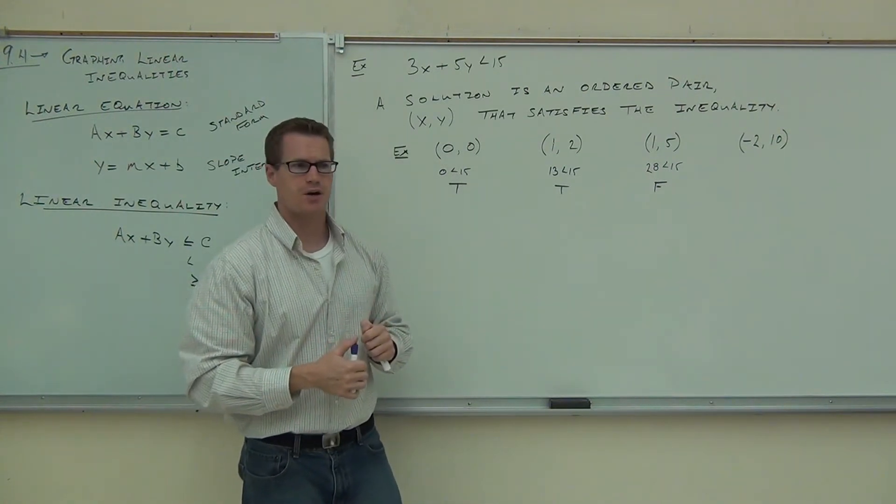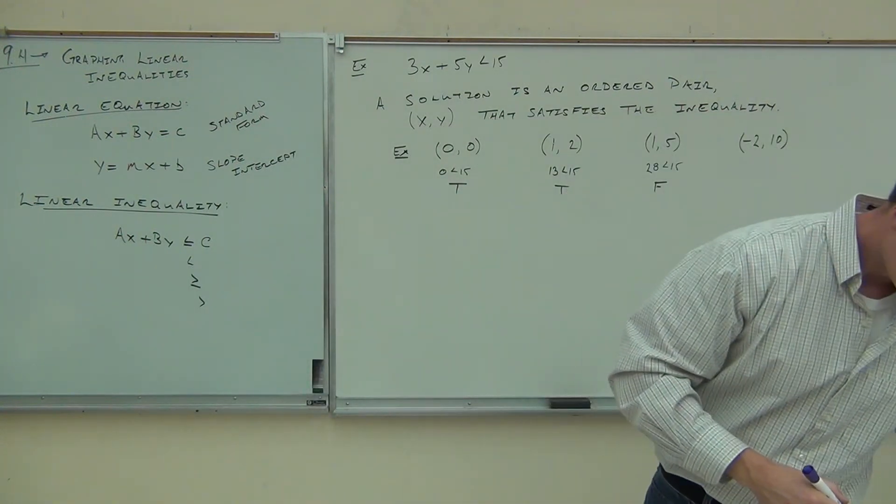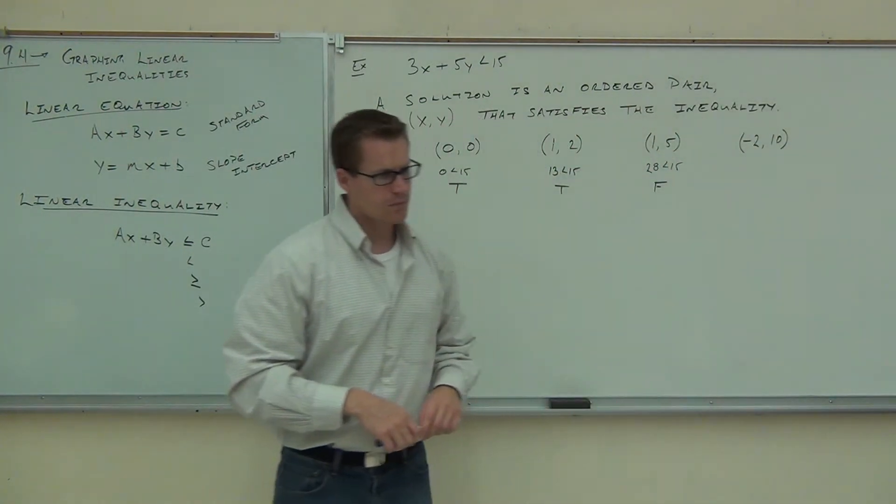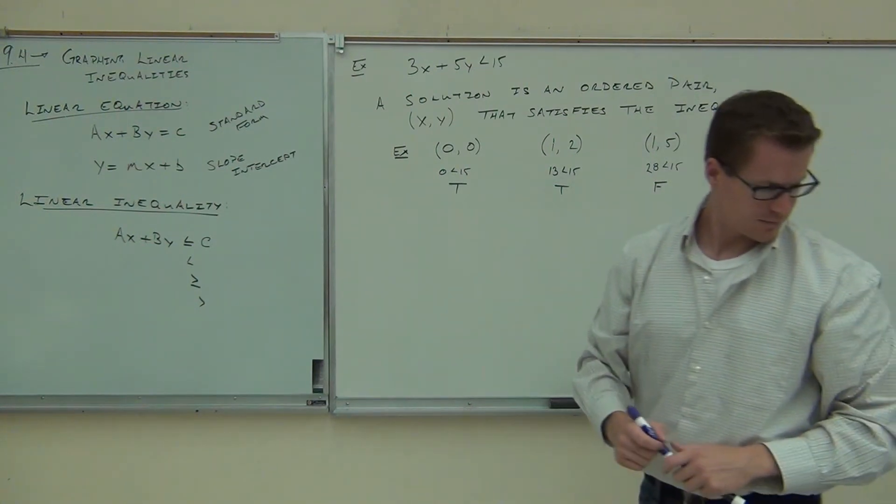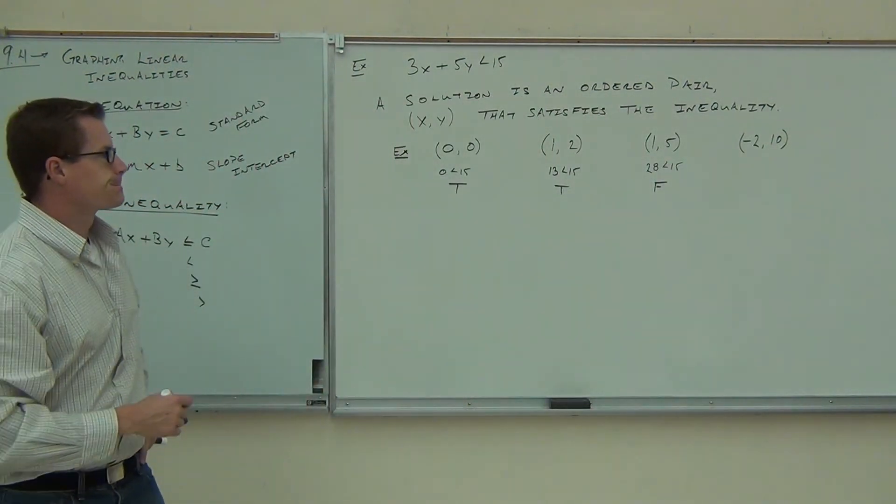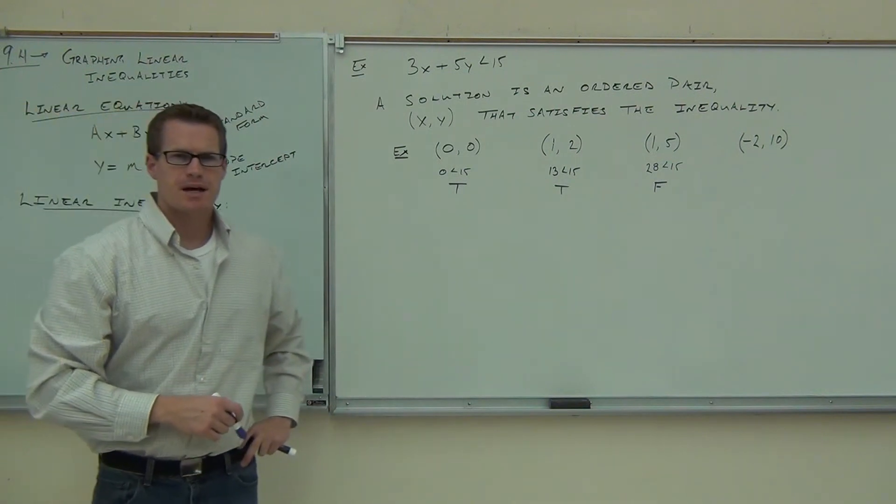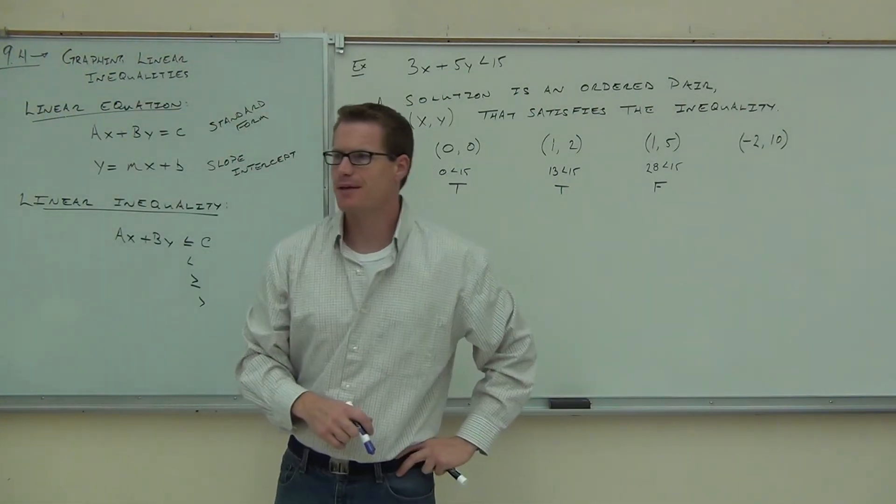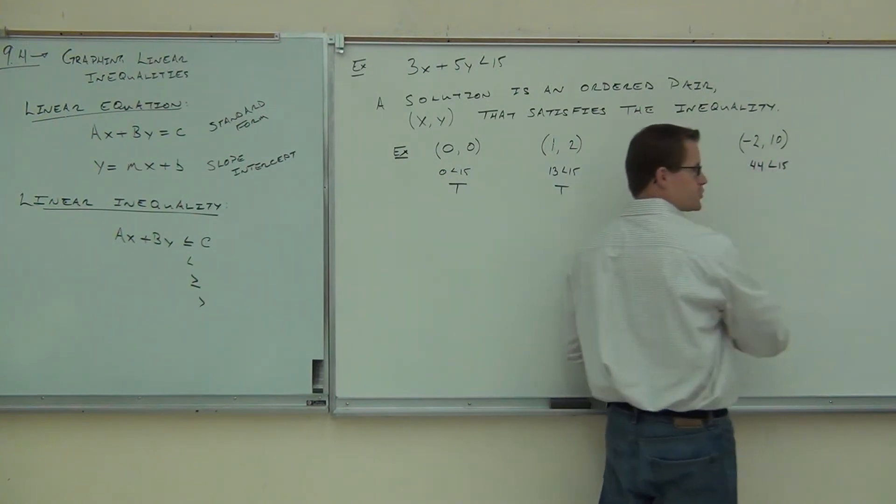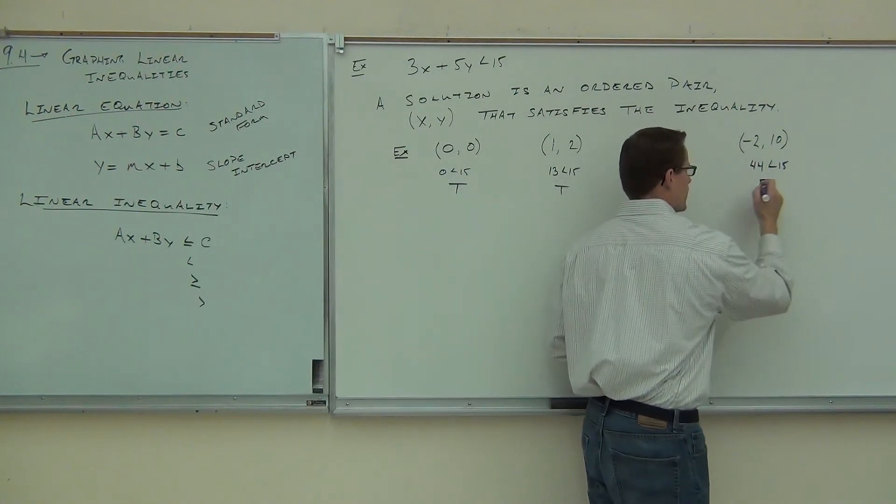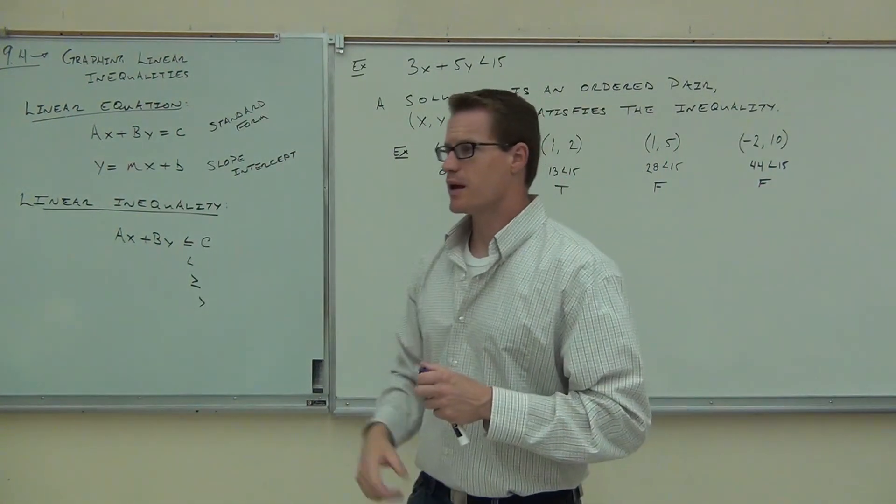I want you to do the last one on your own. See if you have a solution or not, okay? You won't have to say it loud, just do it on your paper. 3 times negative 2 plus 5 times 10. I'm thinking that's how much? 44. 44 < 15. True or false? Definitely false. How many people feel okay on determining whether a point will give you a solution or not?